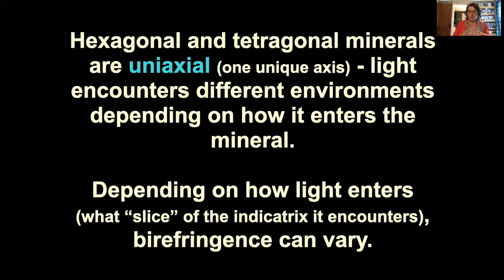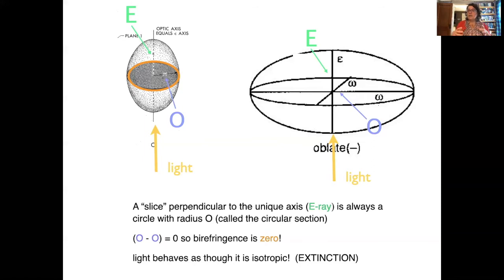Isometric minerals are isotropic — light sees the same environment in all directions. There is no difference in index of refraction, and birefringence is zero. If we find a mineral like this in plain polarized light and cross the polars and it becomes extinct, birefringence is zero and we have an isotropic mineral.